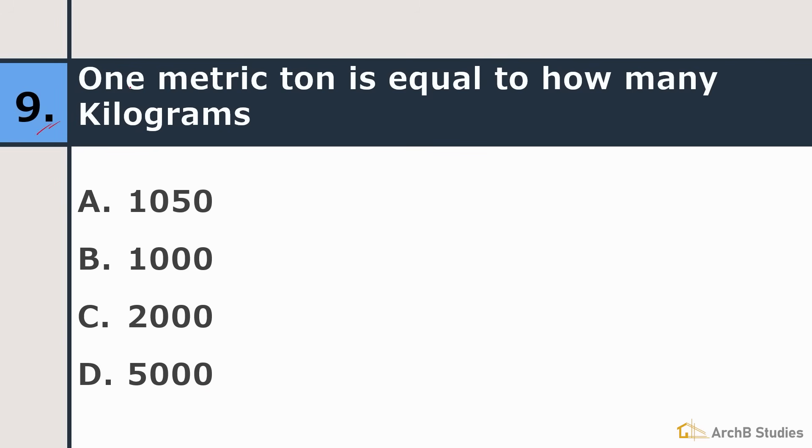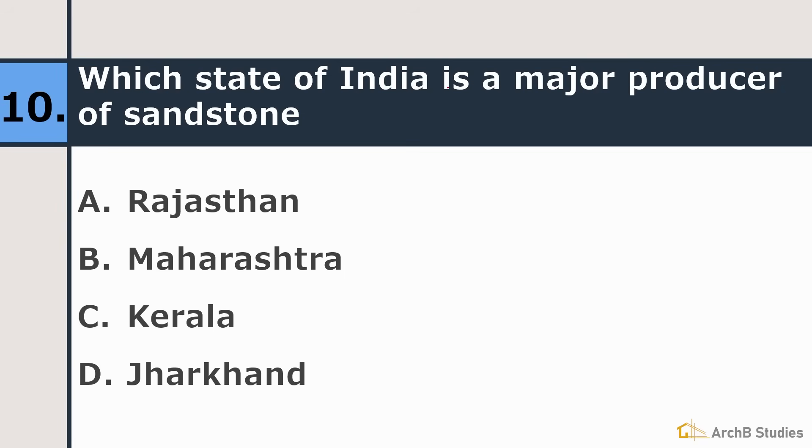Ninth is one metric ton is equal to how many kilograms? 1050 kilograms, thousand kilograms, two thousand kilograms or five thousand kilograms? Right answer is 1000 kilograms. Tenth is which state of India is a major producer of sandstone? Rajasthan, Maharashtra, Kerala or Jharkhand. Its right answer is Rajasthan.